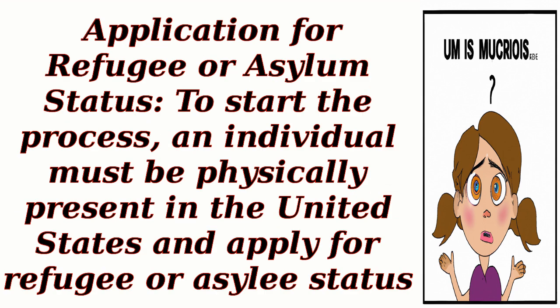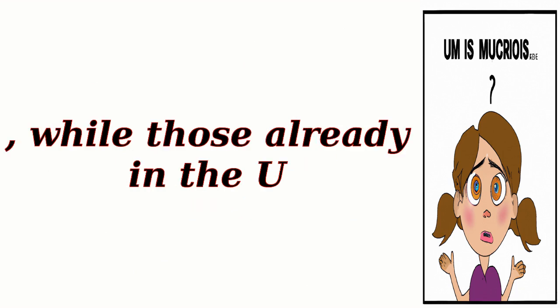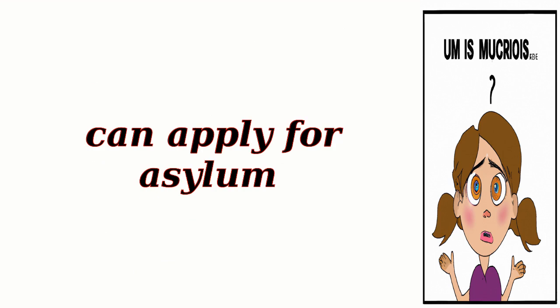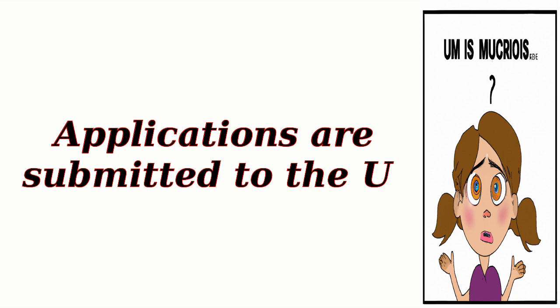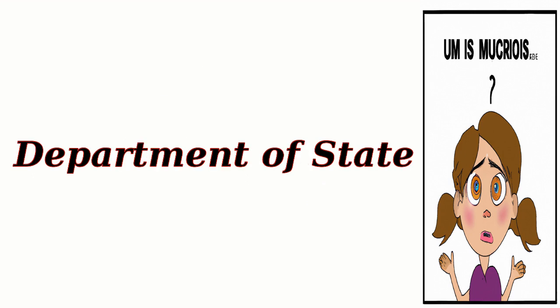Application for Refugee or Asylum Status: To start the process, an individual must be physically present in the United States and apply for Refugee or Asylee Status. Refugees apply for protection while outside the U.S., while those already in the U.S. can apply for asylum. Applications are submitted to the U.S. Citizenship and Immigration Services (USCIS), or, in some cases, to the U.S. Department of State.